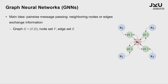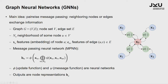Now I want to tell you one more slide about how these graph neural networks work. This is actually a new architecture — not older than 10 years. The main idea is pairwise message passing between the neighboring nodes or edges. Let's look at this simple graph with five nodes — X0, 1, 2, 3, 4 — where everybody is connected to X0 but no other connections.